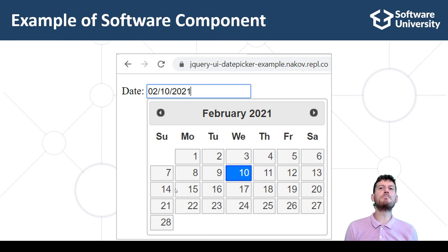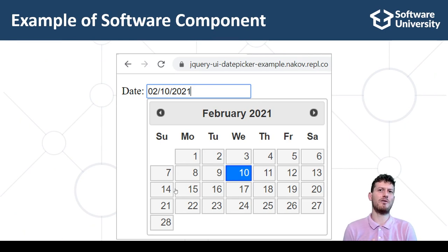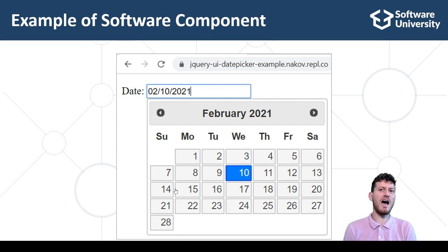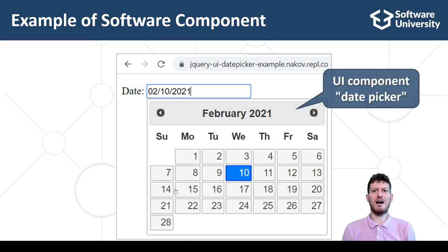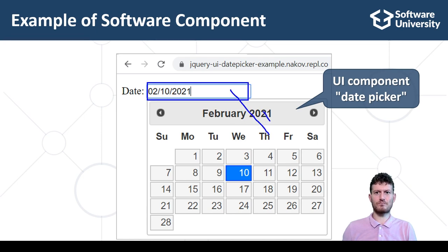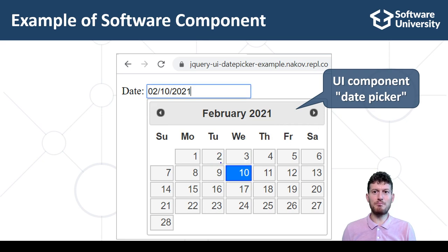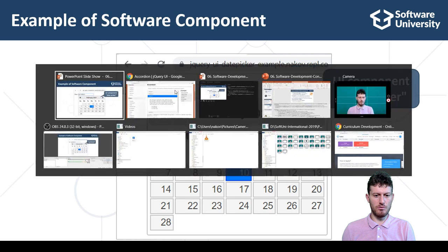This is an example of a software component without any technical details — this is what the end user sees on screen. This is how a date picker UI control can look like. When you click on the date field, a calendar appears to help you select a date.